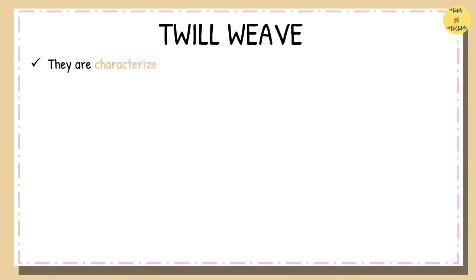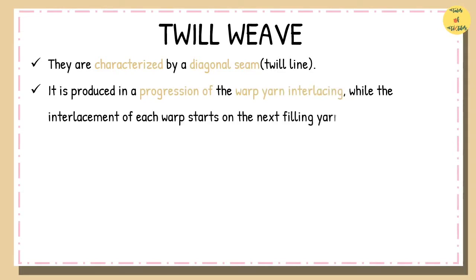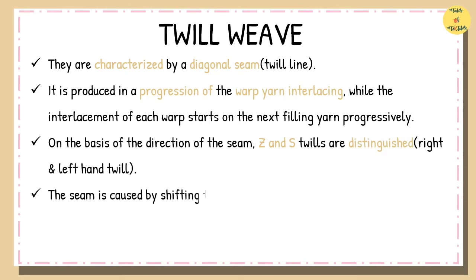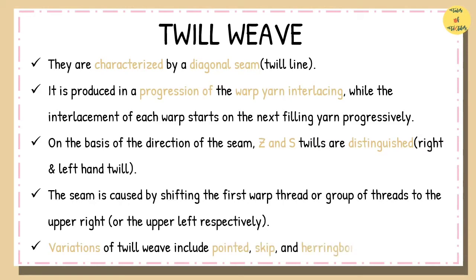Twill Weave. This weave is characterized by diagonal ribs across the fabric. It is produced in a stepwise progression of the warp yarn interlacing pattern, while the interlacement pattern of each warp starts on the next filling yarn progressively. On the basis of the direction of the seam, Z and S twills are distinguished. The seam is caused by shifting the first warp thread or group of threads to the upper right. Some of the variations of twill weave include pointed, skip, and herringbone twill.